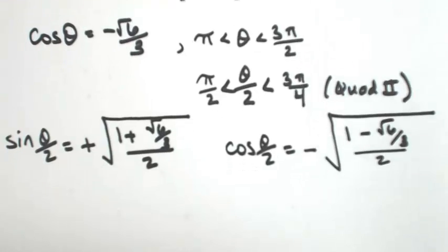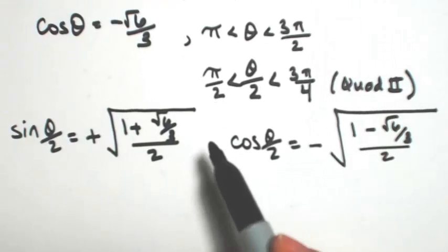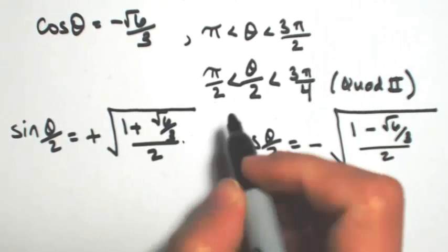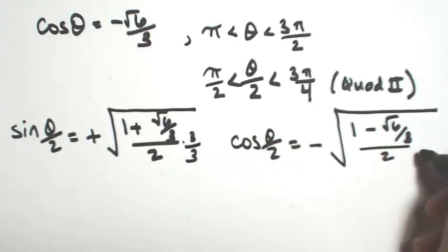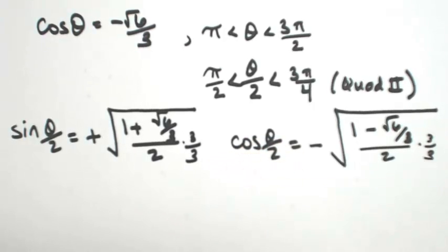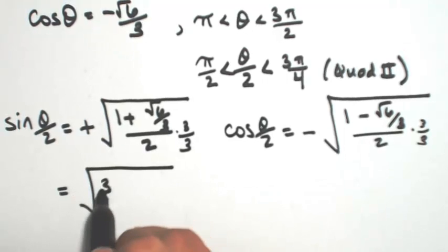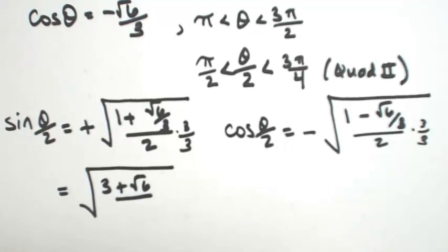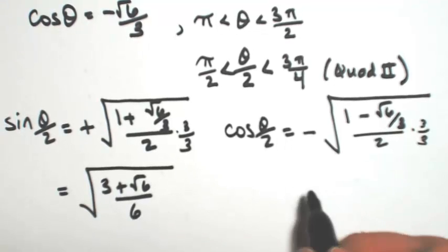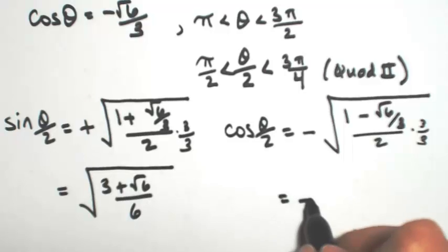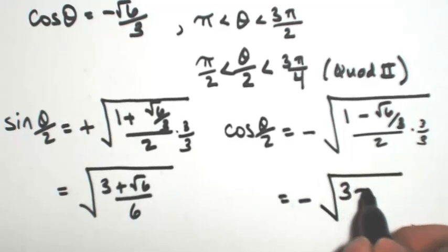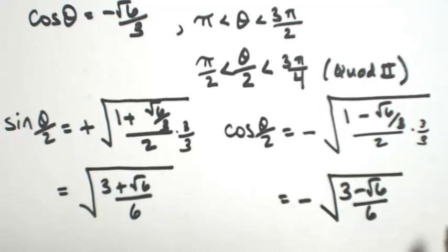So now at this point, we just need to clean everything up. So I want to clear out these fractions that are in the numerator. So I'm going to multiply the top and bottom by a 3 inside the radical. So we're going to get 3 plus the square root of 6 over 6. For the cosine, we're going to get negative. And then 3 minus the square root of 6 over 6.